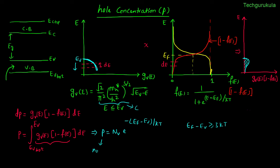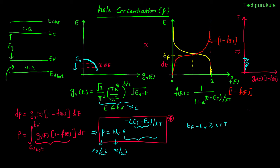We can take the entire constant term as NV, representing the effective density of states in the valence band. Thus, P = NV × e^(−(EF − EV)/kT), valid under the Boltzmann approximation condition EF − EV ≥ 3kT. P has units of number of holes per cm³ in the valence band, so NV also has units of per cm³, and the exponential is dimensionless. Since EF − EV ≥ 3kT, the exponential is much less than 1, meaning P is always much less than NV. NV is the effective density of states, and the exponential tells us what fraction of those states are empty, giving the number of holes. This is a very important expression that we will keep revisiting in future videos.